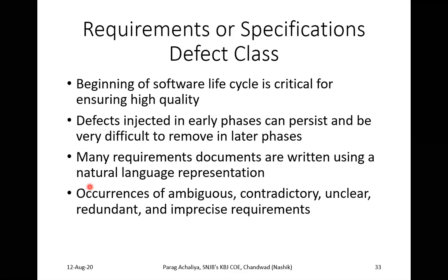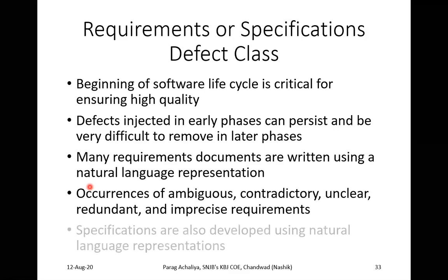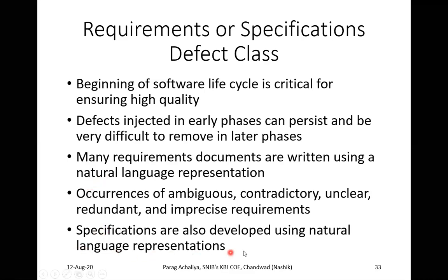Imprecise requirement means it is mentioned in very small context or detail. System specifications are also developed using natural language representation. For example, in a project presentation you specify the SRS (Software Requirement Specification), which is written in natural language: 'We require a Pentium 4 processor, Windows operating system, Eclipse software.' That natural language is only for the user and the developers — not identified by the system.